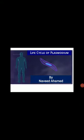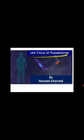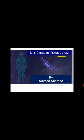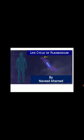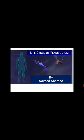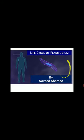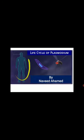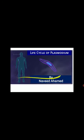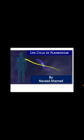In this video we are discussing the life cycle of Plasmodium. Plasmodium is an endoparasite that lives in the blood of man and causes a disease known as malaria. Plasmodium completes its life cycle in two hosts: man and mosquito. Man is the intermediate host and the mosquito is the primary host, because Plasmodium completes its sexual reproduction in the mosquito and its asexual reproduction in man.